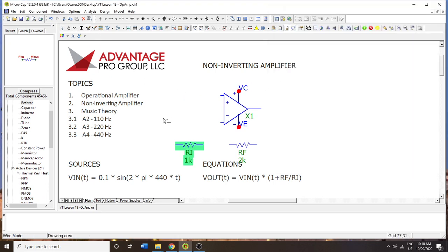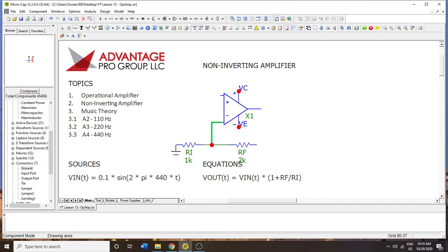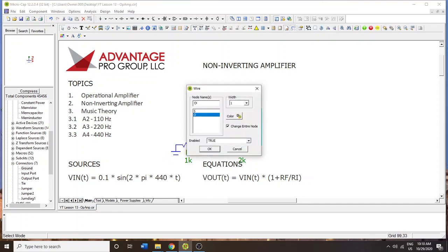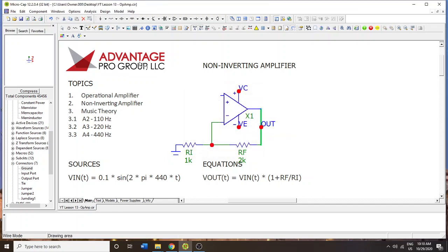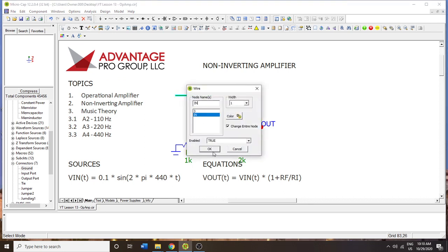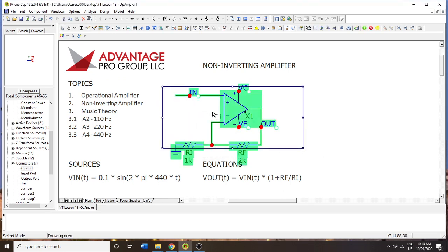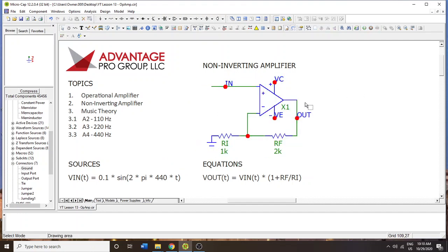You connect this by taking the median point between these two resistances and putting it at the inverting terminal. Next you put the ground and then connect to the output. This is really all you need to create a non-inverting amplifier. You have all the pieces you need together.